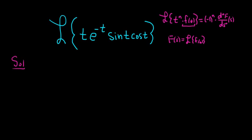In this problem we have t to the first power, so n is equal to 1, which means we only have to take one derivative. This here is going to be our little f of t. We'll start by computing the Laplace transform of little f of t, then take the derivative one time and plug it into the formula.